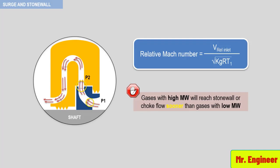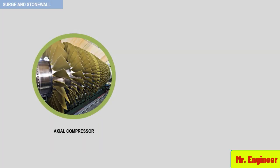The only case of a dynamic compressor damage caused by stonewall that I have experienced involved the axial compressor of a gas turbine. The design of the combustion chambers and turbine section allowed the axial compressor to operate in stonewall under certain operating conditions.